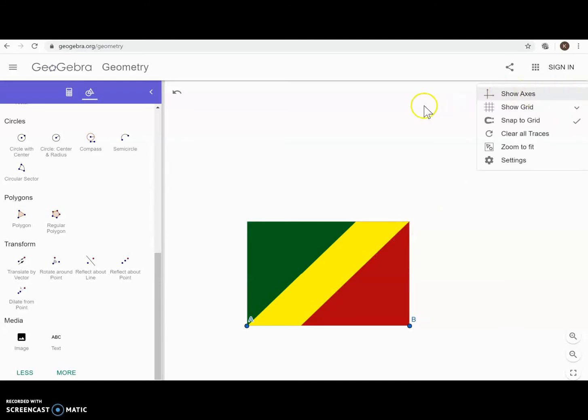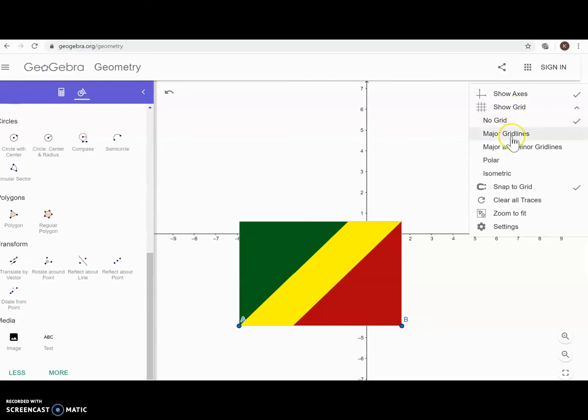And to do that, we hit the little wheel. And we're going to go Show Axes. Even more specifically, we're going to Show Grid. And we're going to do the Major Gridlines.